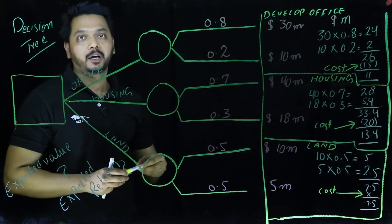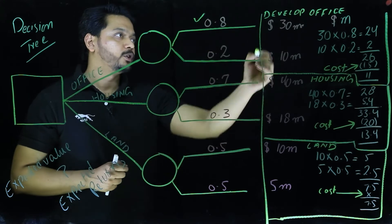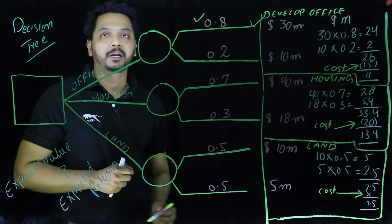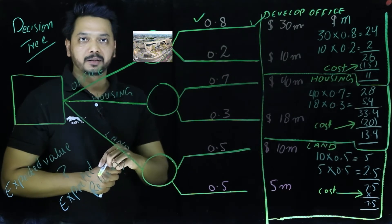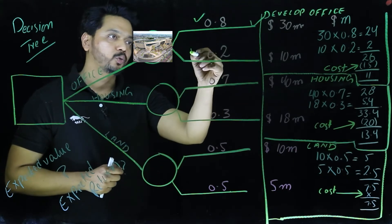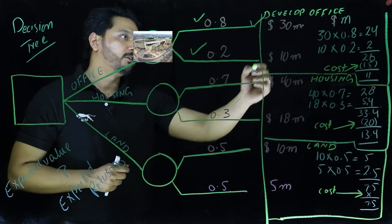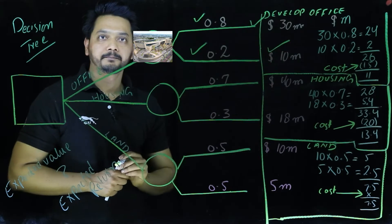This will give them $30 million. In comparison, if the expected probability of failure is 20% here, which will give them an expected return of $10 million.